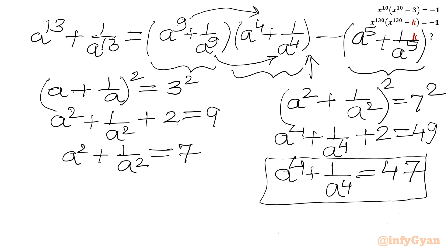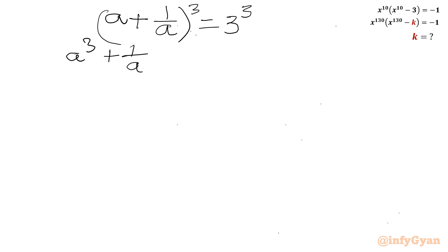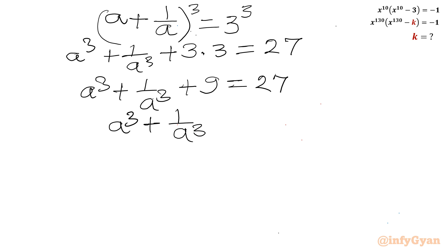Now we have to find a^9 plus 1 over a^9 and a^5 plus 1 over a^5. Let me first calculate a^3 plus 1 over a^3. Starting from a plus 1 over a equal to 3 and cubing both sides: a^3 plus 1 over a^3 plus 3 times (a)(1/a) times (a plus 1/a) equals 27, giving a^3 plus 1 over a^3 plus 9 equal to 27, so a^3 plus 1 over a^3 equals 18.